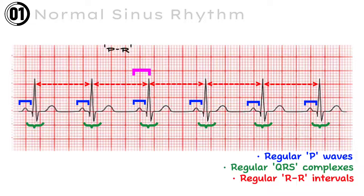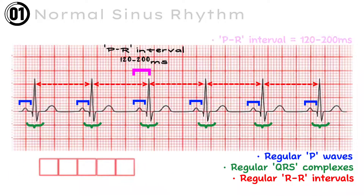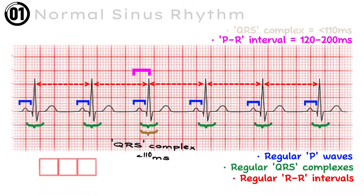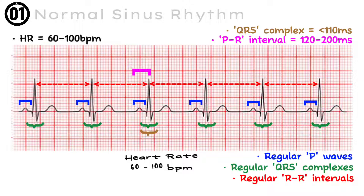The PR intervals should be between 120 to 200 milliseconds, or 3 to 5 small squares. And QRS complexes should be less than 110 milliseconds, or less than 3 small squares. In normal sinus rhythm, heart rate is between 60 to 100 beats per minute.